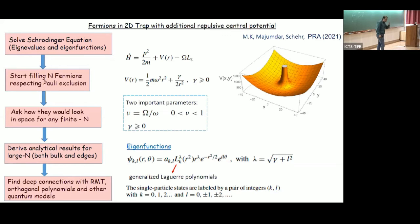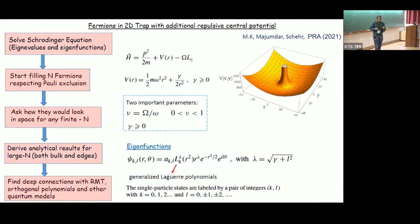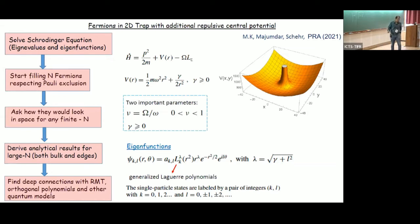What would be the density profile given this external potential? Sometimes naive guesses may not be entirely correct. You would think at most you'd have a dome with some depletion due to the repulsive potential. But can you have something more exotic? Indeed that is what we are going to answer.